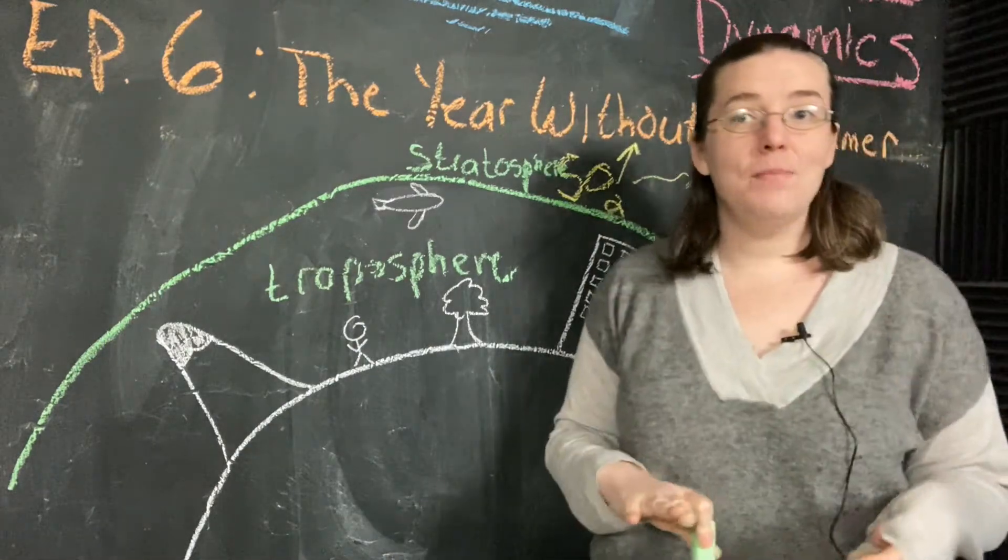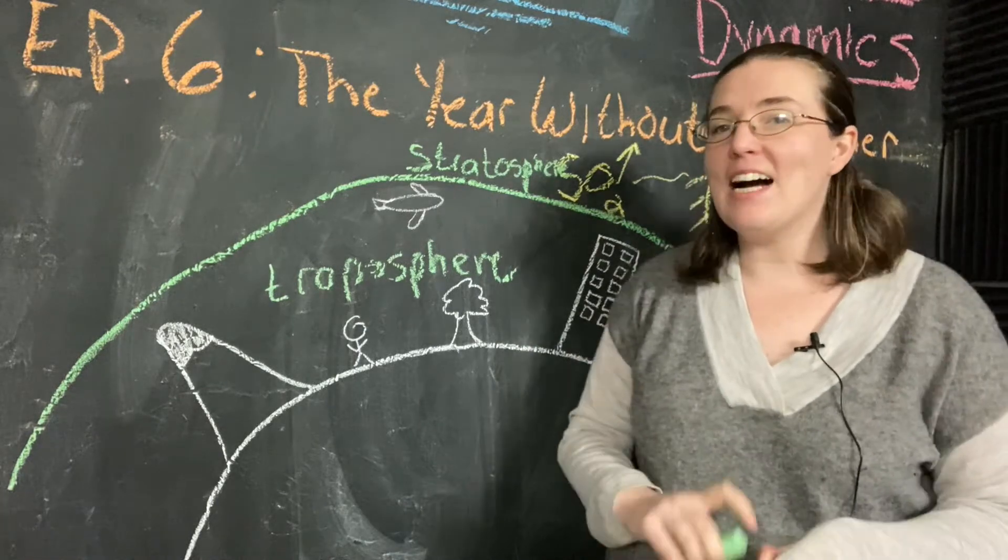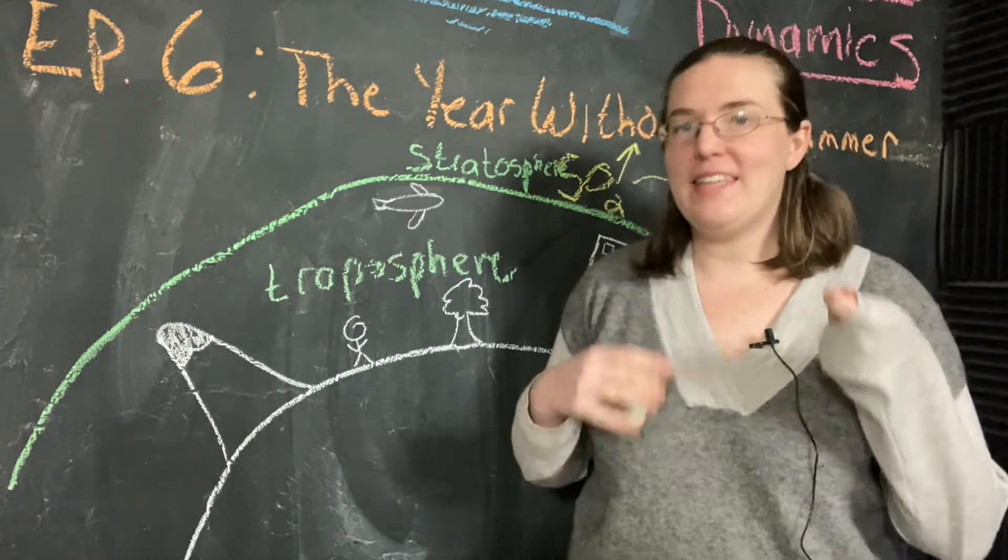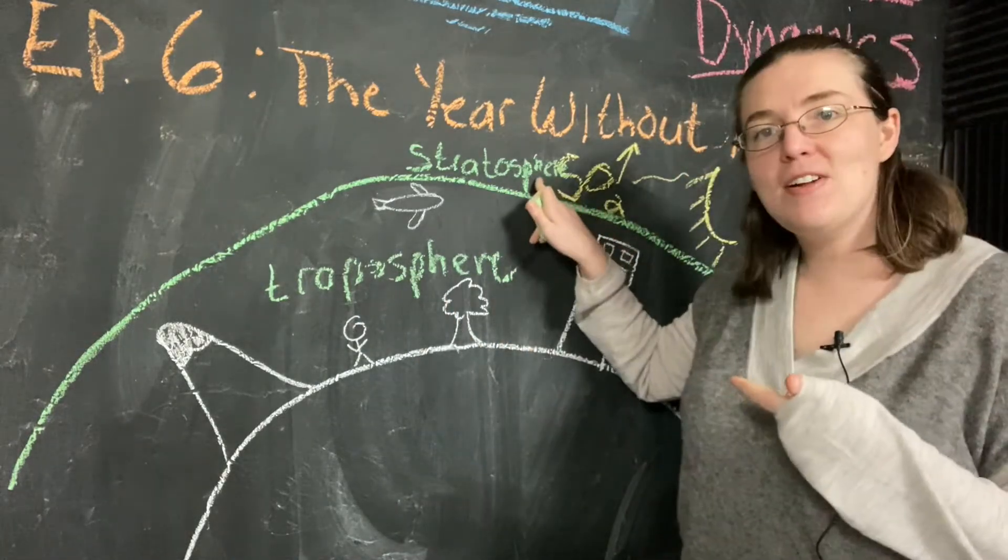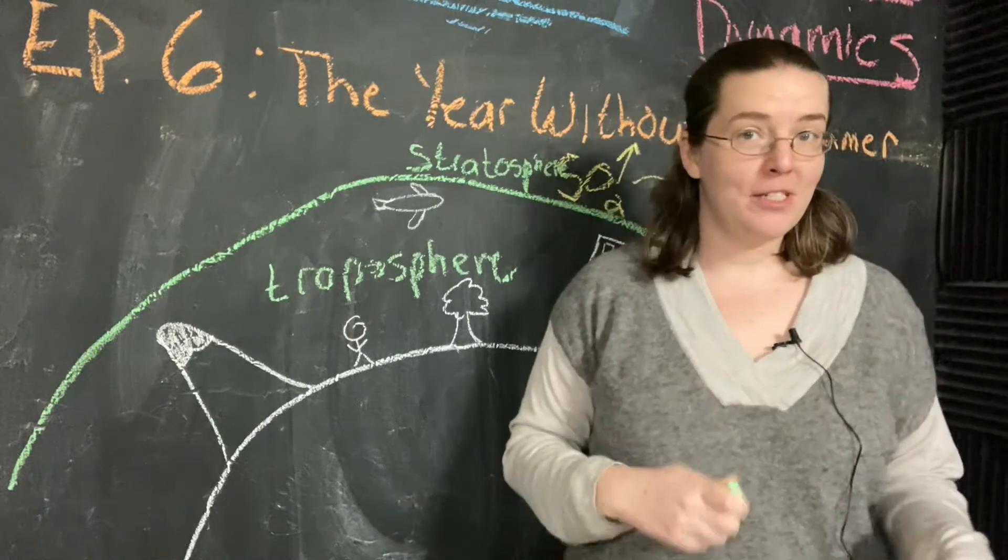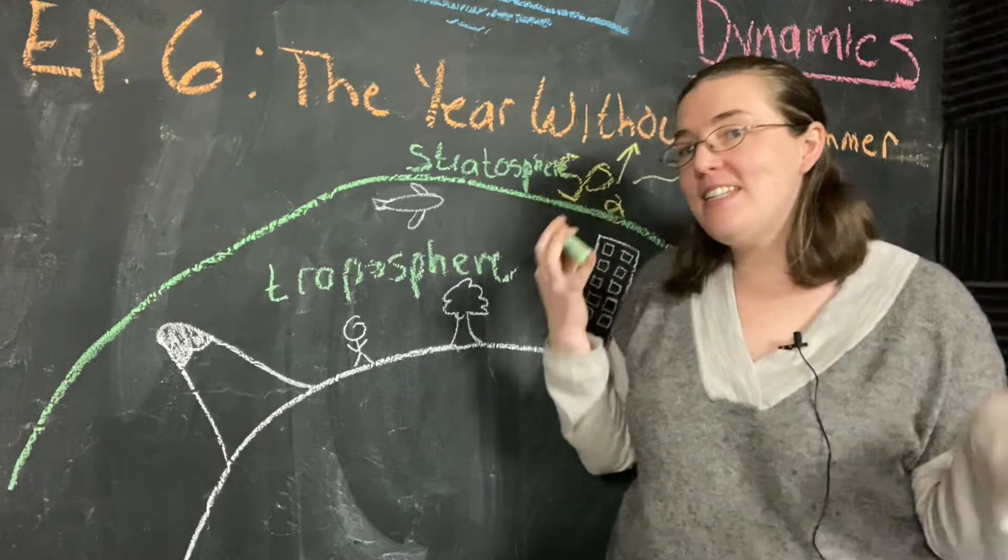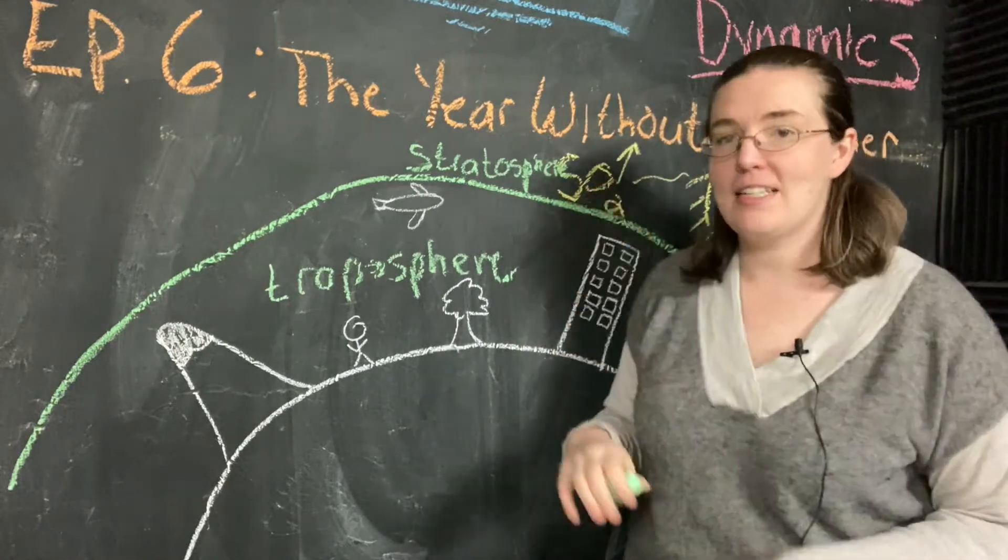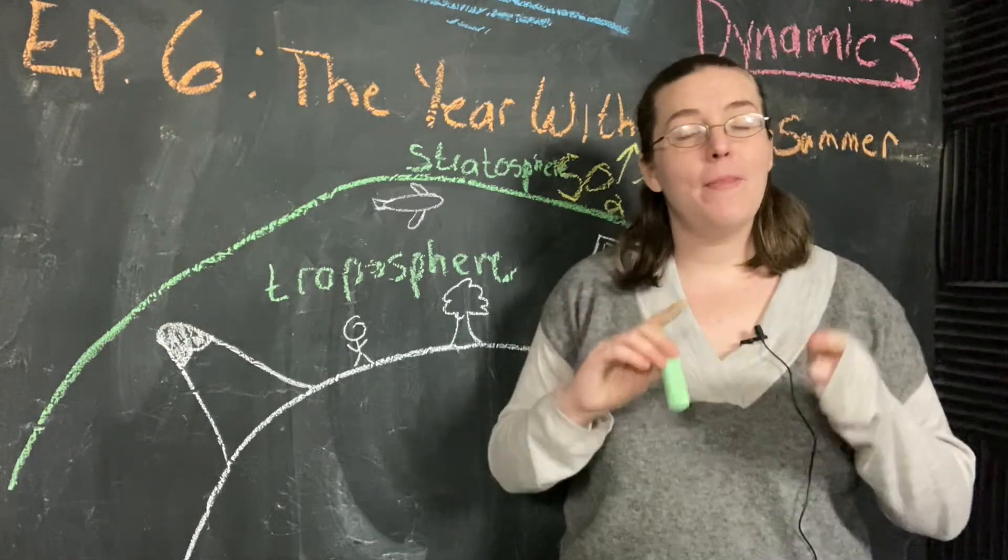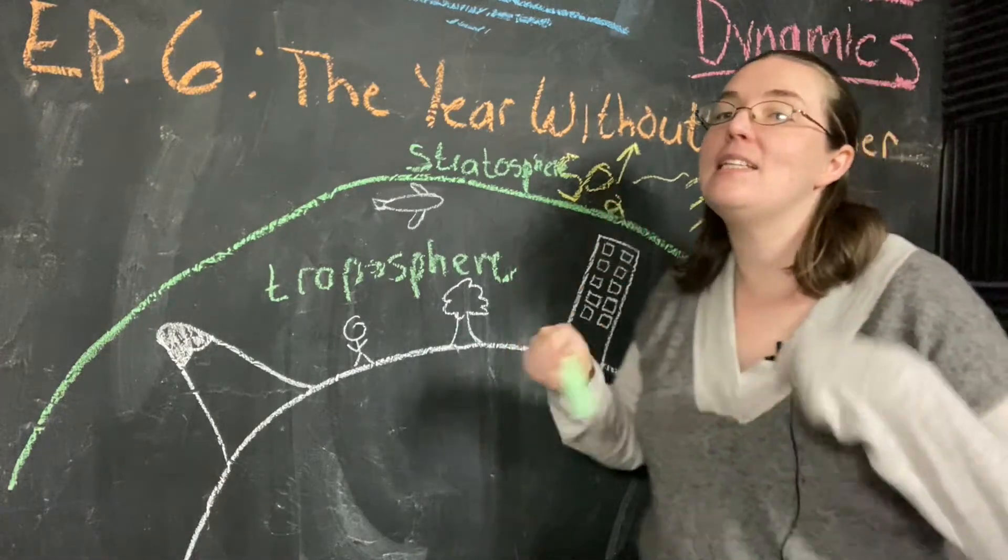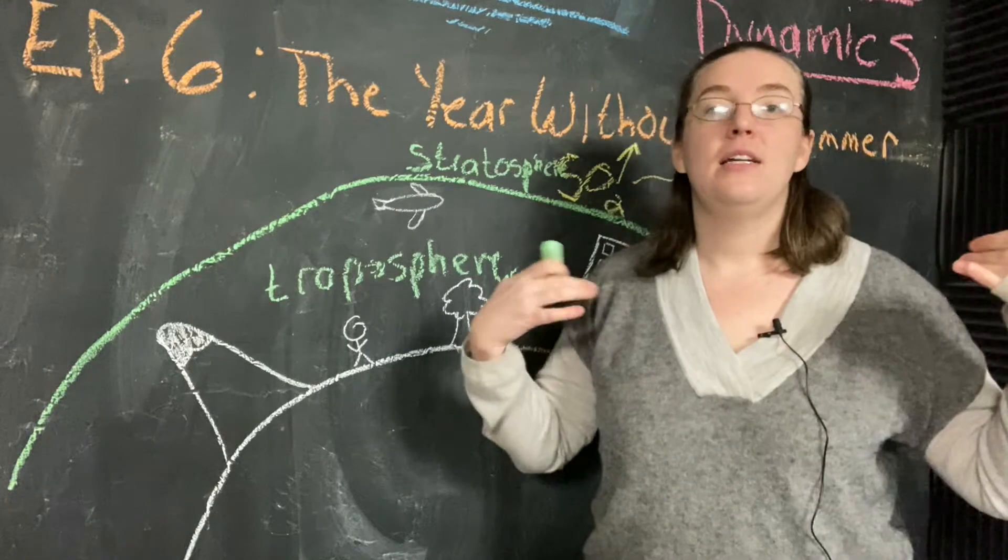Why is it important that our sulfur dioxide is in the stratosphere? Well, that's because it's actually really hard to get things from the troposphere into the stratosphere and vice versa. Most of the chemical reactions that remove unwanted things from the atmosphere, like sulfur dioxide, happen down here in the troposphere. So the importance of sulfur dioxide being in the stratosphere is that it means it's going to stick around for a long time.